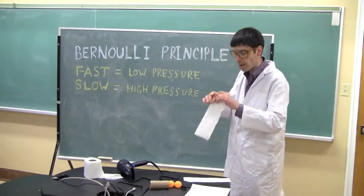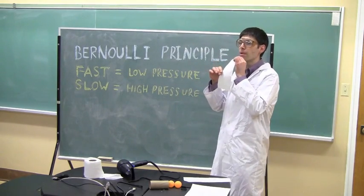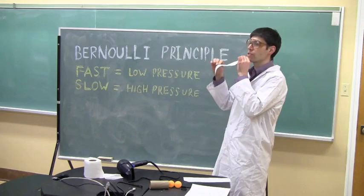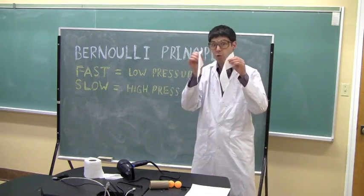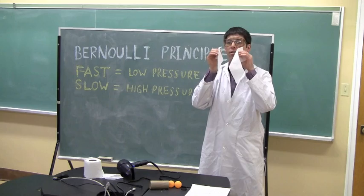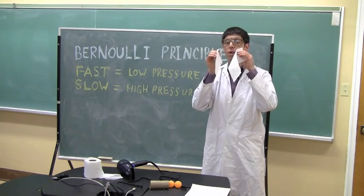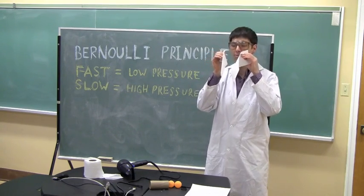We saw this first when I blew across the paper. The paper moved from a zone of high pressure to a zone of low pressure. We also saw this when I blew between the pieces of paper, creating a zone of low pressure into which the two pieces of paper moved into.